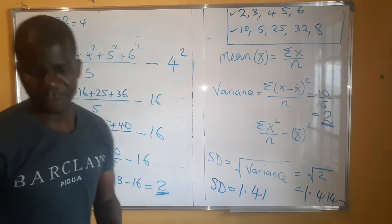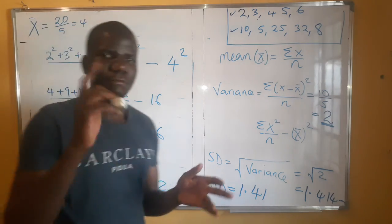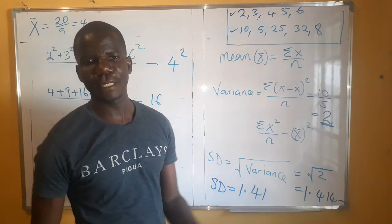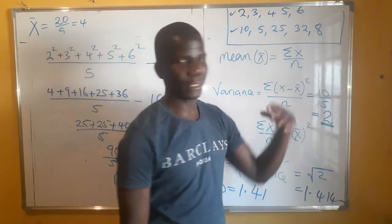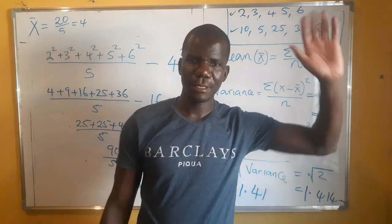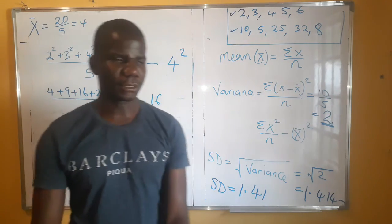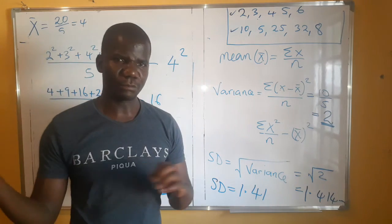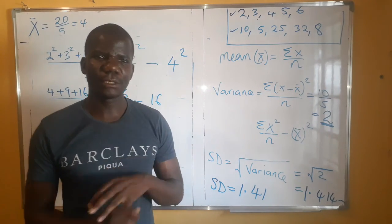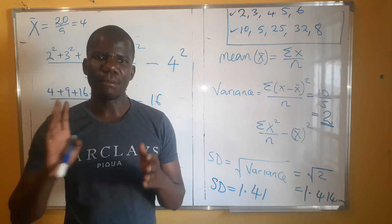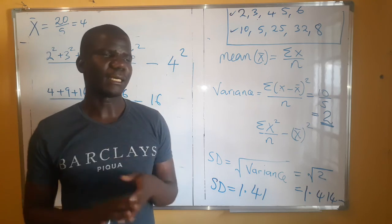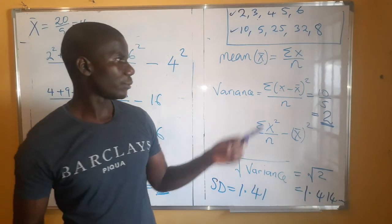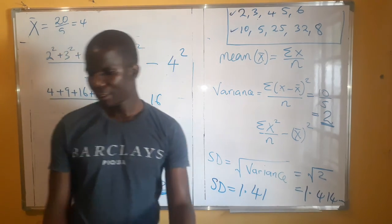That is all about the mean, variance, and standard deviation of ungrouped data. You can test both formulas to confirm you get the same answer, and then try the second question on your own. Don't forget to subscribe to this channel — the next two lessons on statistics will cover percentiles, quartiles, and mean, variance, and standard deviation of grouped data. Thank you very much.